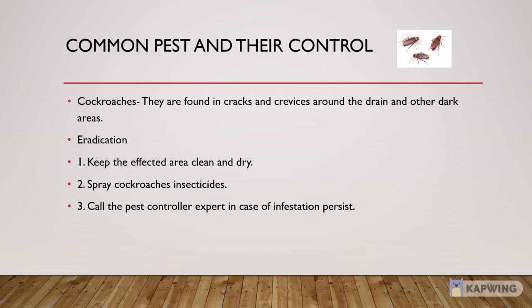Next is Cockroaches. We all must have come in contact with cockroaches in our homes. They are found in cracks and crevices around the drain and other dark areas. Control methods: 1. Keep the affected area clean and dry. 2. Spray cockroach insecticide which is available on shelves in the market. 3. Call a pest control expert in case the population persists.